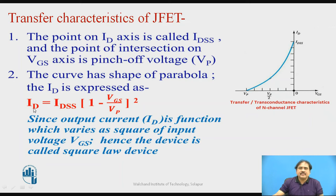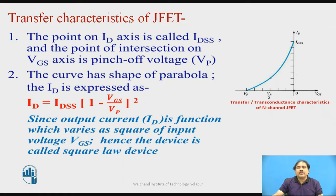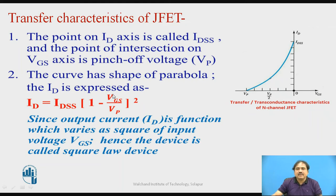The output current ID is proportional to the square of the input voltage from gate to source. That is why the JFET is normally called a square law device — the output is a function of the square of the input voltage. Since the gate-to-source voltage is reverse biased, when used in the formula we take VGS as negative, so the bracket becomes 1 plus some term.